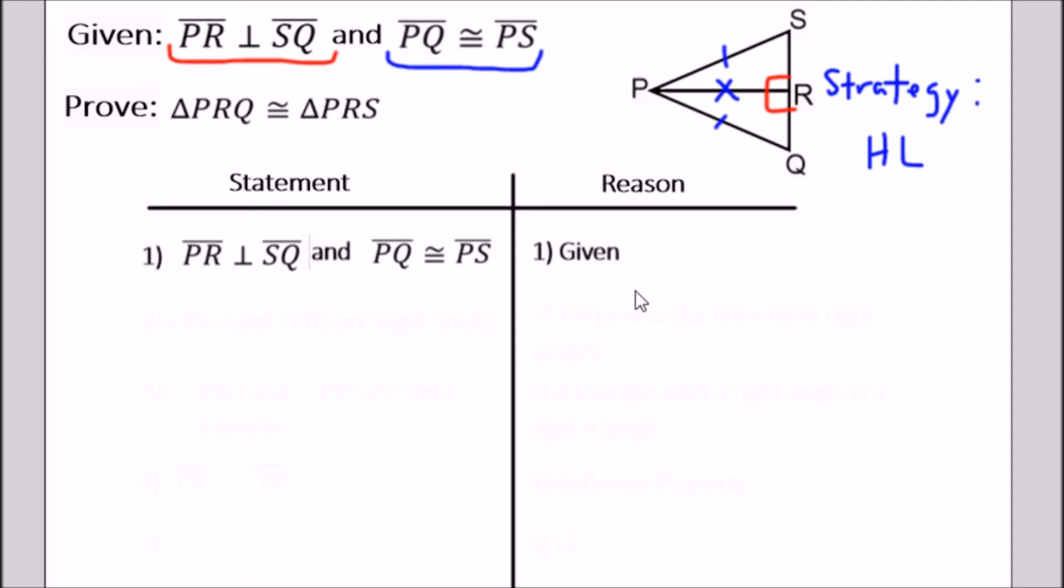Now the second thing we can say is that since lines PR and SQ are perpendicular, angle PRQ and angle PRS are right angles. The reason for that comes from the definition of perpendicular: perpendicular lines form right angles.